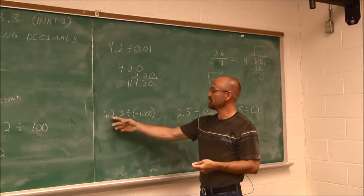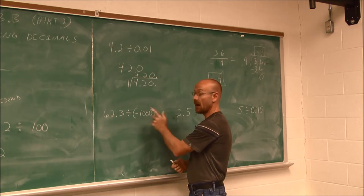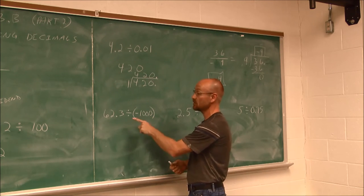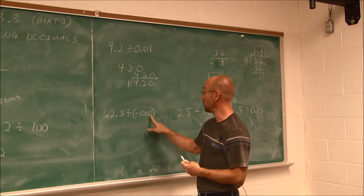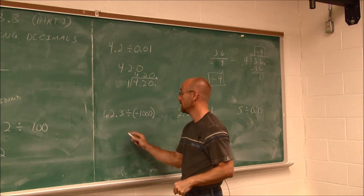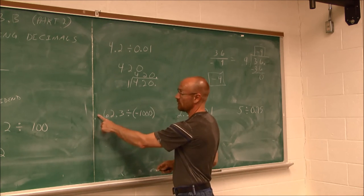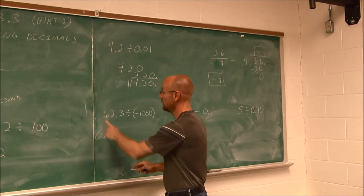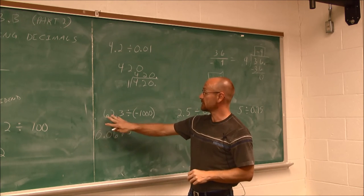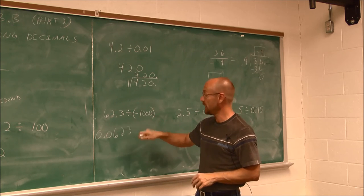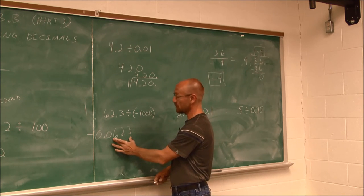Let's look at 62.3 divided by negative 1,000. I'm dividing by a factor of 10, so I move the decimal to the left. How many factors of 10? 1, 2, 3 — so I move the decimal three spots to the left: 1, 2, 3. I need a placeholder zero, giving me 0.0623. Assessing the sign: positive divided by negative, one negative, so the answer is negative 0.0623, or negative 623 ten-thousandths.